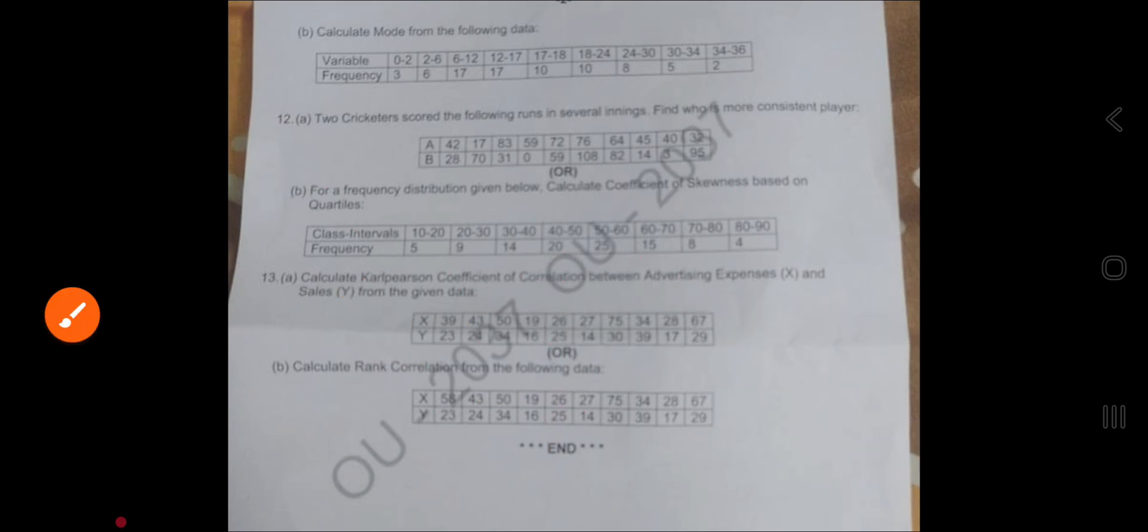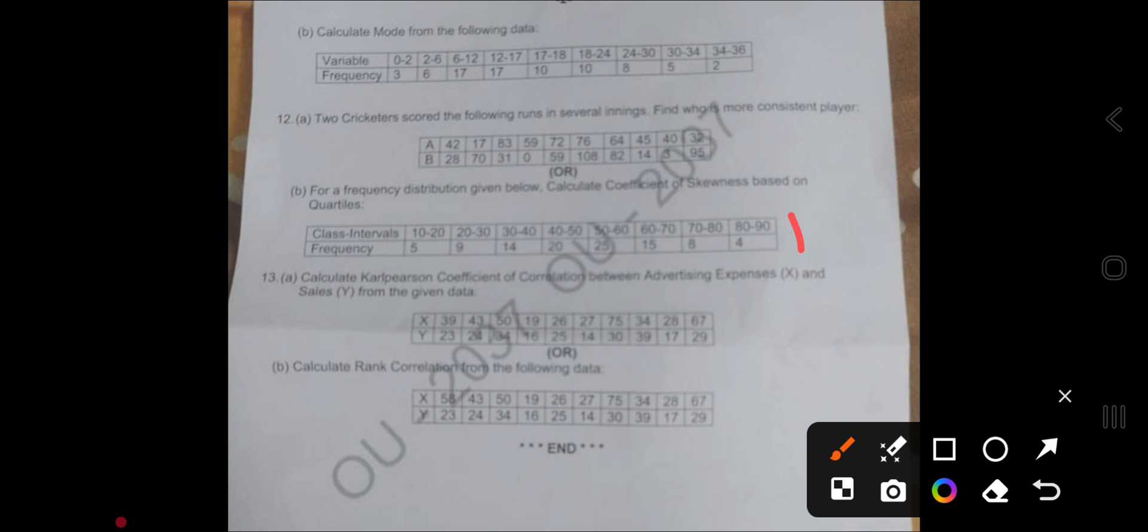What is the formula of Bowley's skewness? Q3 plus Q1 minus 2 median divided by Q3 minus Q1. We need to calculate median, Q1, Q3. Simply one column only will have—cumulative frequency. I hope everyone attempted this.